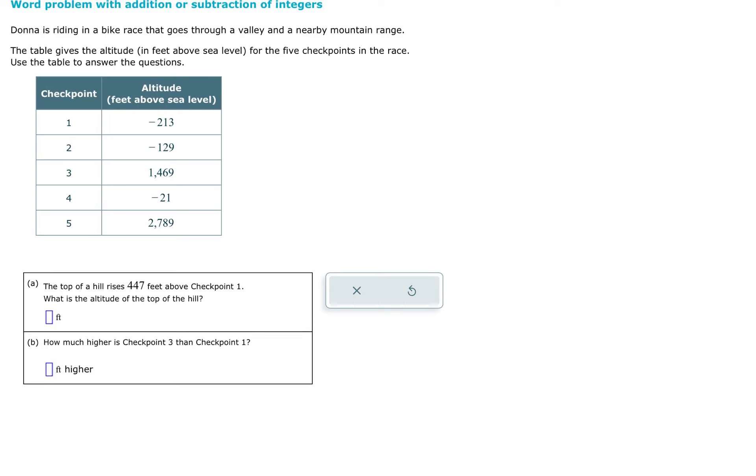This topic is word problems with addition or subtraction of integers. The first problem says Donna is riding in a bike race that goes through a valley and a nearby mountain range. The table gives the altitude in feet above sea level for the five checkpoints in the race.